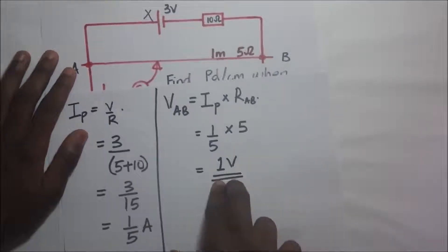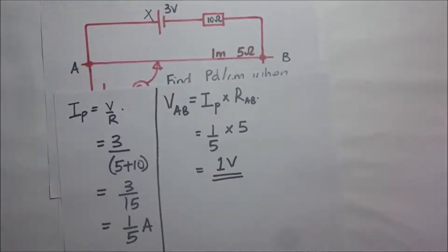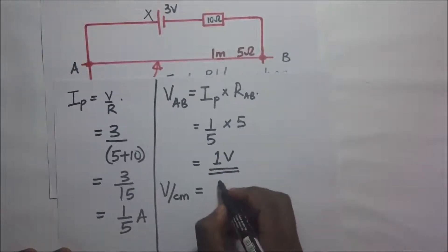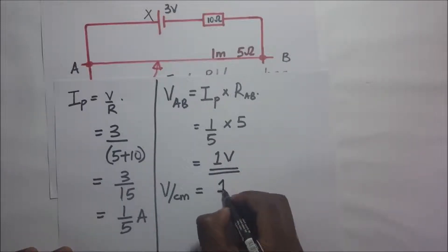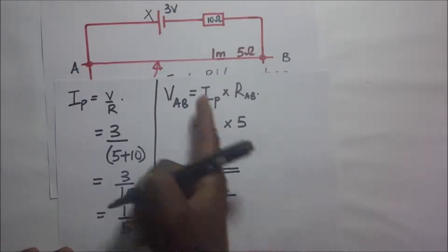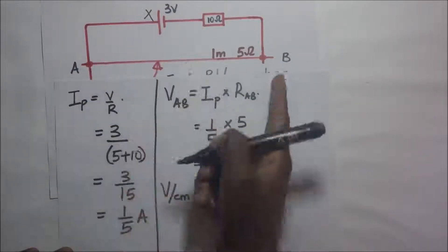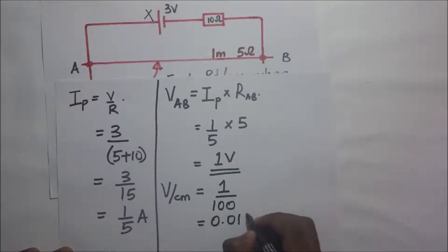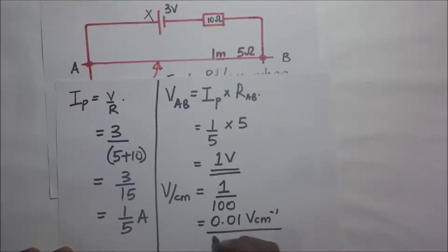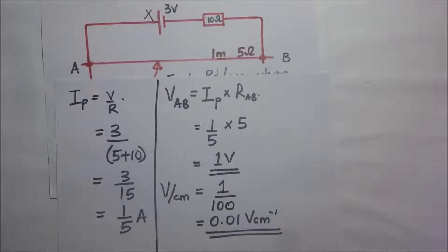The potential difference across wire AB is 1 volt. We can now find the PD per unit length: PD per centimeter equals the potential difference across AB, which is 1 volt, divided by the length of wire AB, which is 100 centimeters. That gives us 0.01 volts per centimeter.